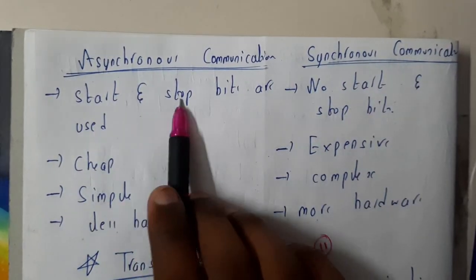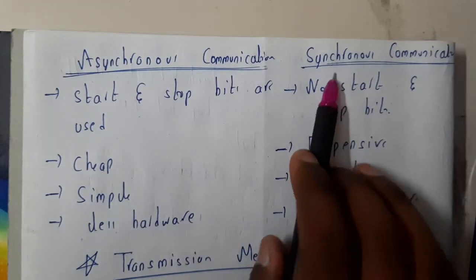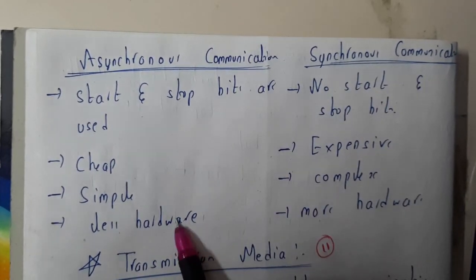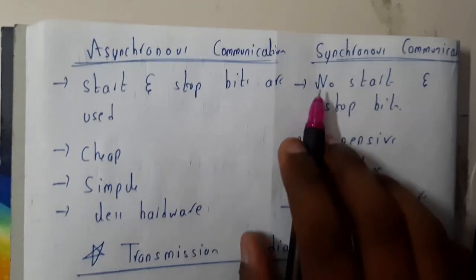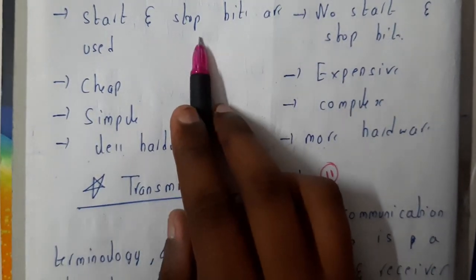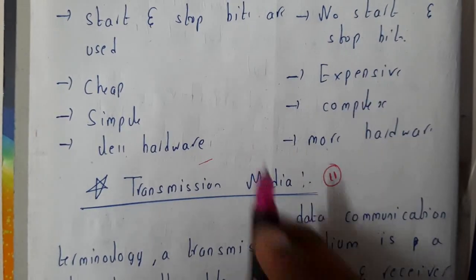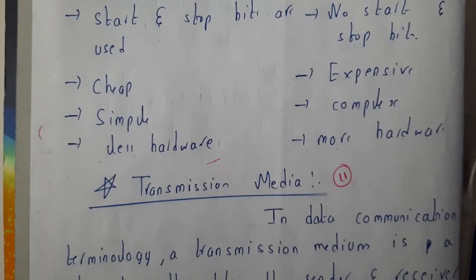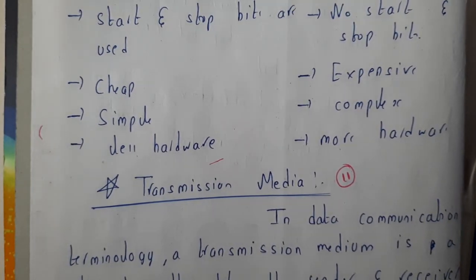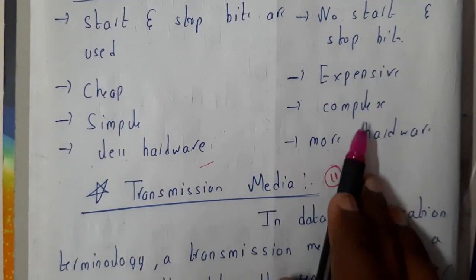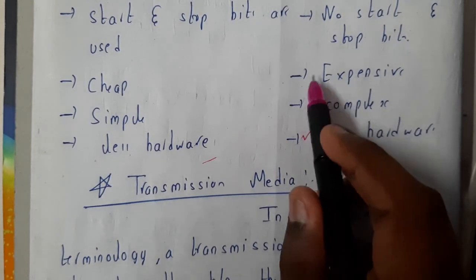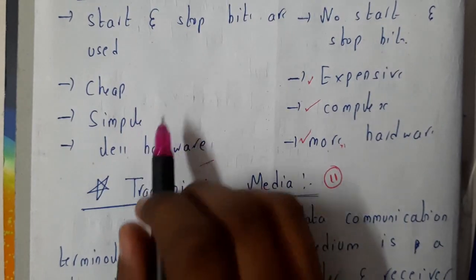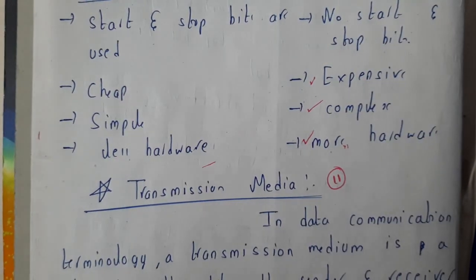In asynchronous communication, start and stop bits are used, whereas in synchronous communication, start and stop bits are not used. Asynchronous is cheap while synchronous is expensive. Asynchronous is simple while synchronous is complex. Asynchronous uses less hardware while synchronous requires more hardware. In synchronous communication, since there are no start and stop bits, you need to count bits — one through eight — and break them accordingly, which requires more hardware and makes it complex and expensive.